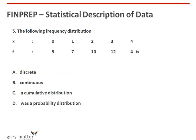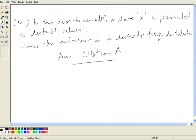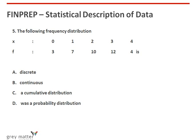Fifth question: the following frequency distribution is given with variable X as 0, 1, 2, 3, 4 and corresponding frequency F as 3, 7, 10, 12, 4. We want to find what type of frequency distribution it is. The variable X is presented as distinct values; hence the distribution is a discrete frequency distribution. So the answer is option A.